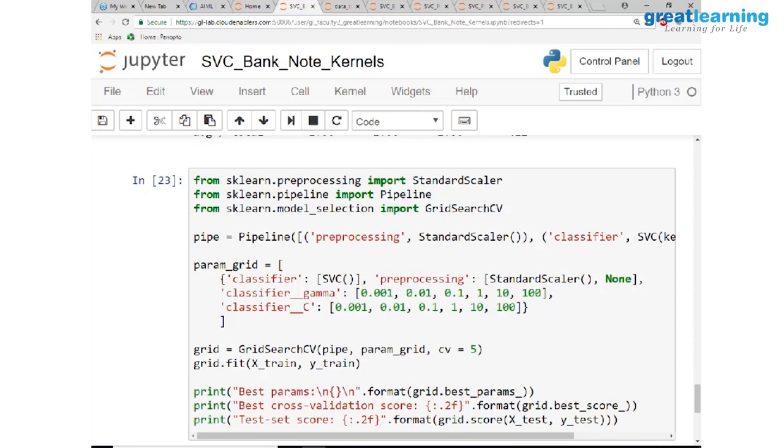Instead of trying out the various parameters one by one, the various kernels one by one, what we can do is we can use a concept called grid search. Scikit-learn gives you a facility of using a concept called grid search, so I am going to use that.